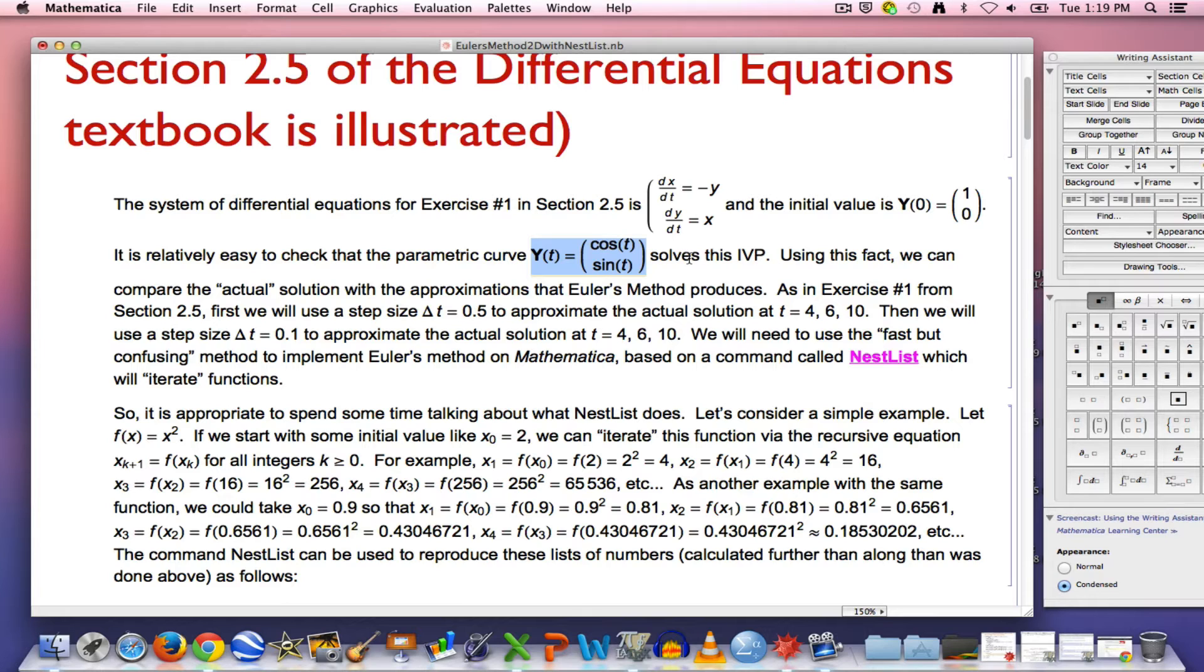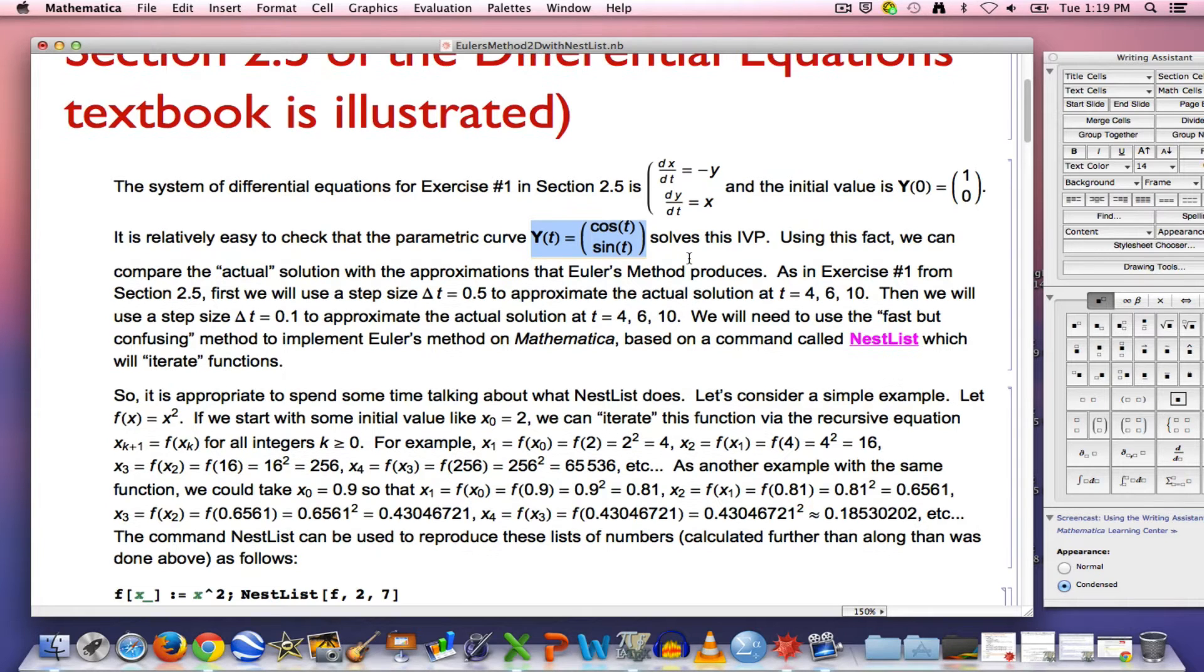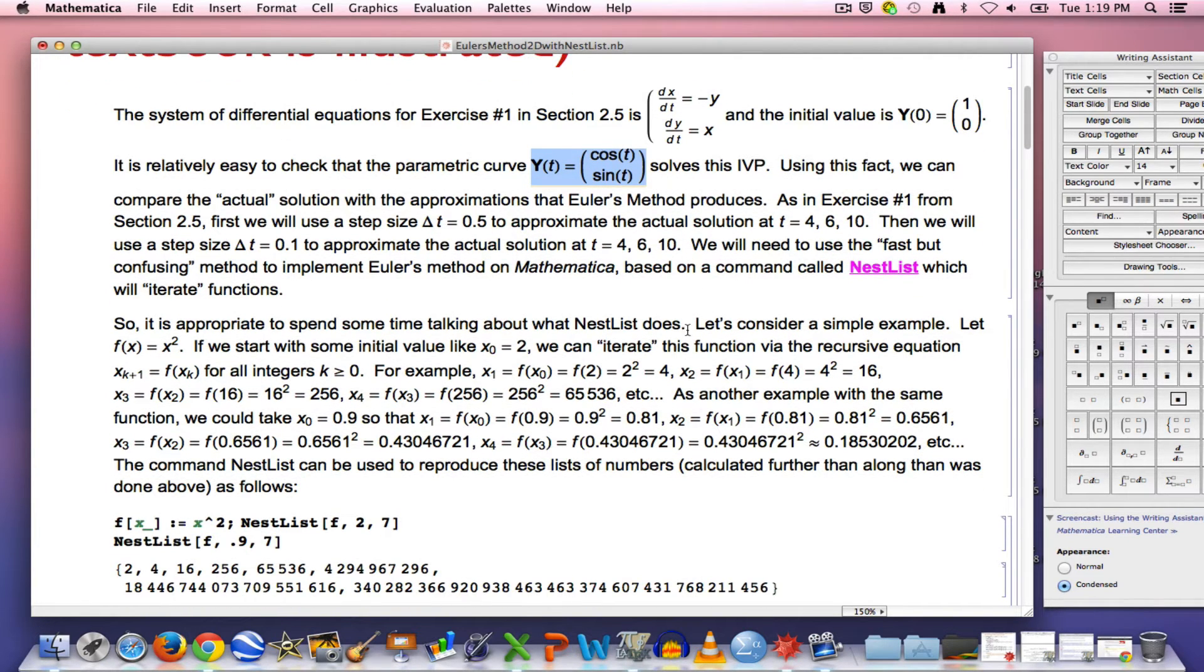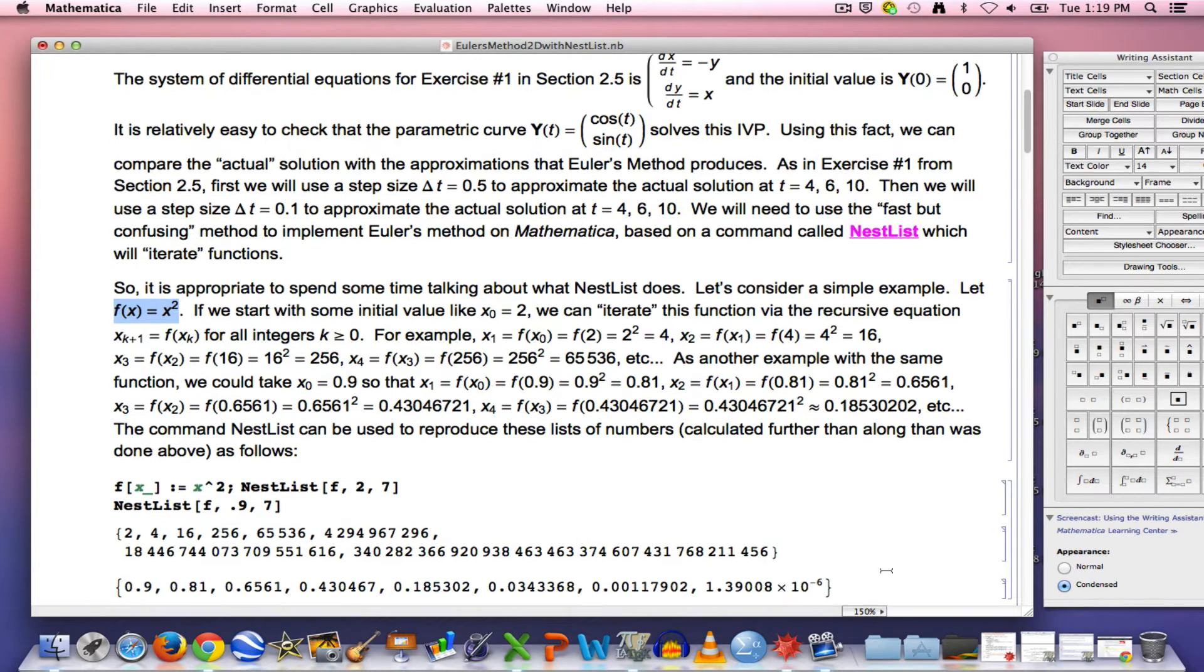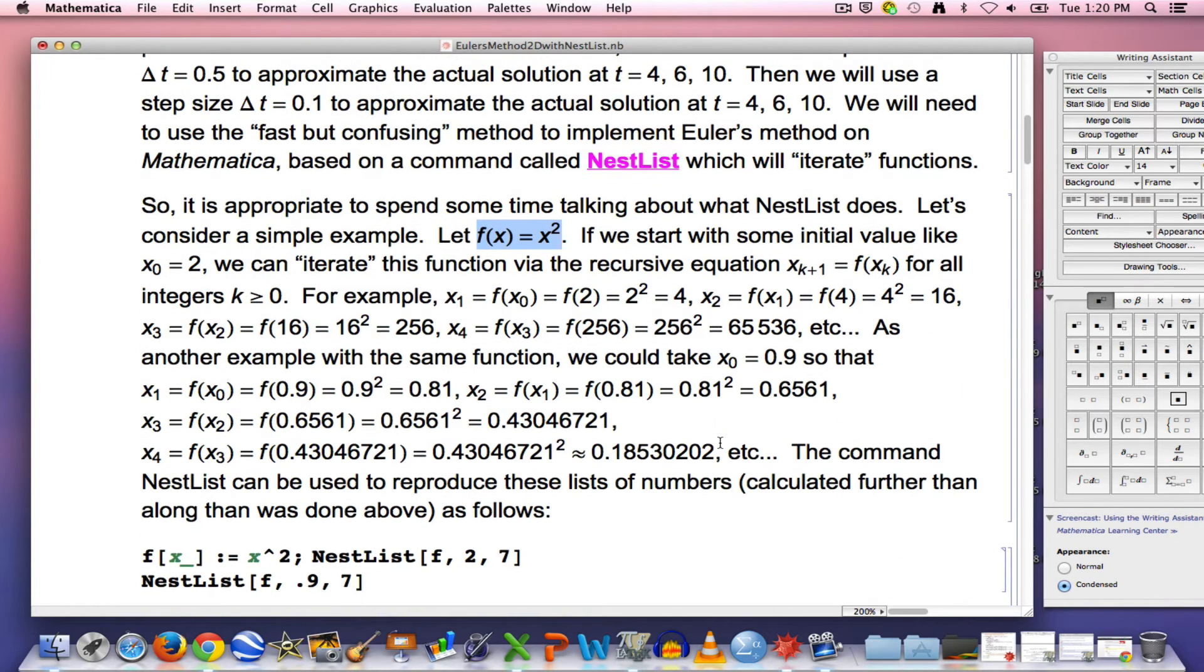Alright, but we want to approximate it with Euler's method, and to use nest list like I've been doing here, you need to understand what iteration is. And so I explained it in this paragraph with an example. If you've got a function f of x equals x squared, we can iterate a function like that by essentially applying this recursive equation that you see here, x sub k plus 1 equals f of x sub k. You pick an initial condition, x sub 0 or x 0 for short is 2 for example, and you use the iterative recursive equation to find x1, x2, x3, etc. in this way.